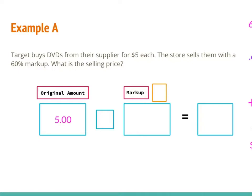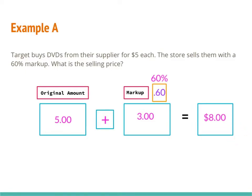The markup is 60%, but I can't put 60% in my calculator — I have to turn that to a decimal. 60% as a decimal, moving my decimal two places to the left, is 0.60 or 0.6. So I'm going to take $5 times 0.6, and when I do that I end up with $3. That is my markup. But it doesn't ask for the markup — it asks for the selling price. It's very important to read what the question is asking for. They're asking for the total price, so I have to add $5 plus $3, and I get $8. The selling price of each DVD is $8.